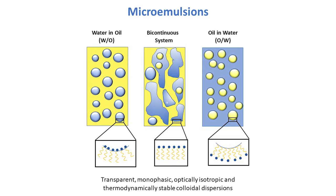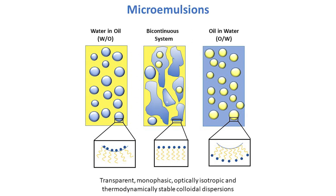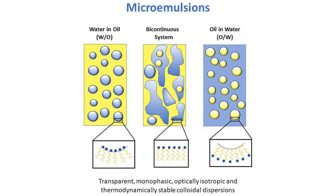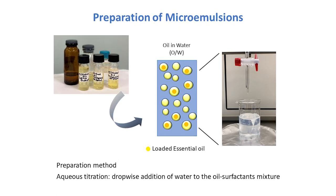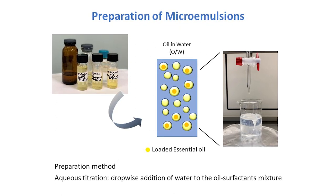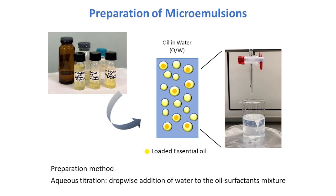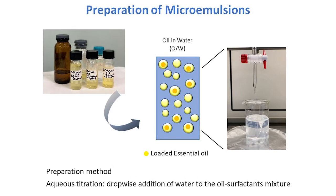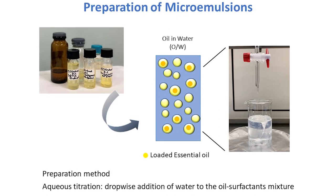They can be water in oil, oil in water or bicontinuous systems with average globule dimensions between 10 and 100 nanometers. Microemulsions are prepared using the aqueous titration method, the dropwise addition of water to the oil-surfactants mixture. Microemulsion spontaneously forms to reach thermodynamic equilibrium. Essential oils are loaded in the microemulsion's oily phase.